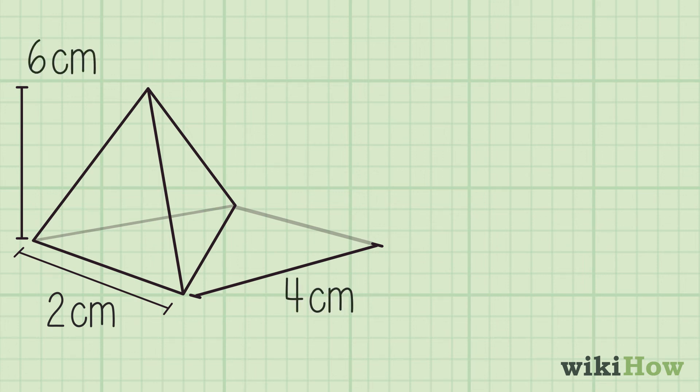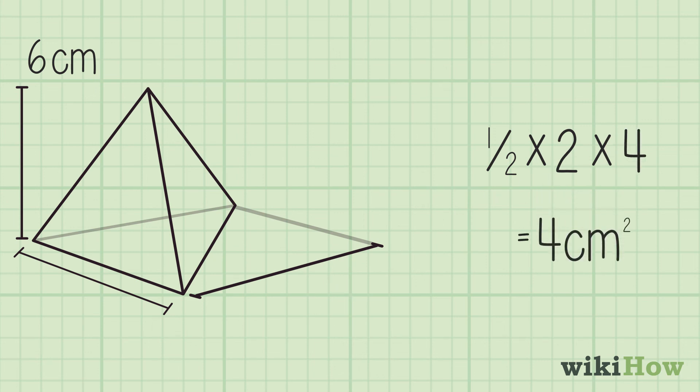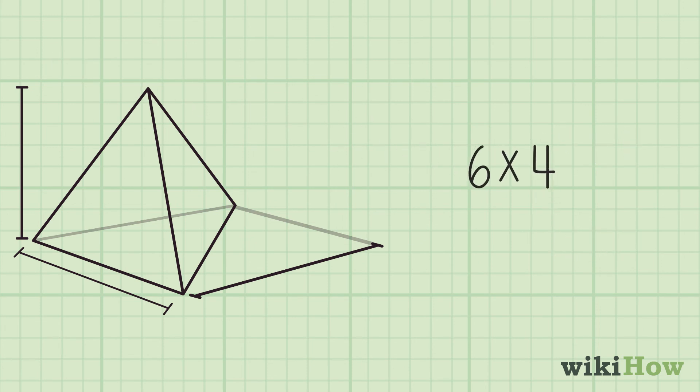And the pyramid has a height of 6 centimeters. First, find the area of the triangle using the formula one-half times 2 times 4, which will give you a base area of 4 square centimeters. Next, multiply the area by the height of the pyramid, then multiply the product by one-third.